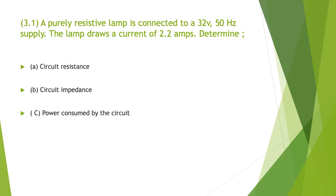A purely resistive lamp is connected to a 32 volt, 50 hertz AC supply. The lamp draws a current of 2.2 amps. We have to determine A, the circuit resistance, B, the circuit impedance, and C, the power consumed by the circuit.